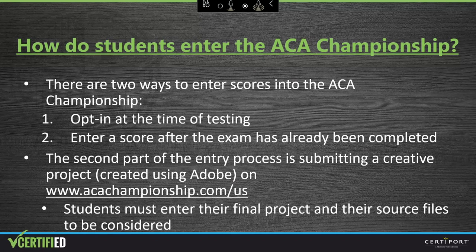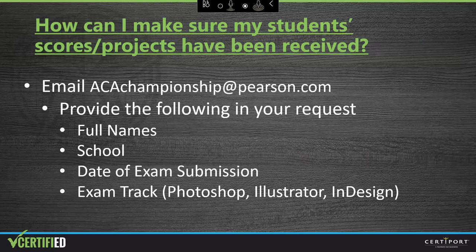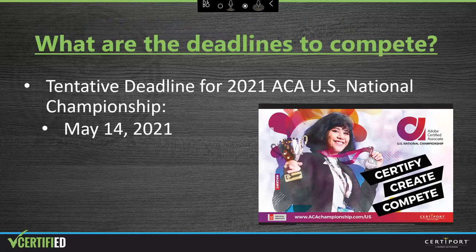We're excited that 2021 will be the second year for the live championship. As their teacher, you can check to make sure your student's exam scores have been submitted and their creative projects have been received by sending an email to acachampionship@pearson.com and providing the student's name, school name, date of exam, and which exam was entered. The tentative deadline for students to enter their exam scores and submit a project and source files for the U.S. National Championship is May 14th, 2021. After the deadline, a group of judges will review the submitted projects and judge them based on a rubric. The students with the top projects will be invited to compete at the Adobe Certified Associate U.S. National Championship.